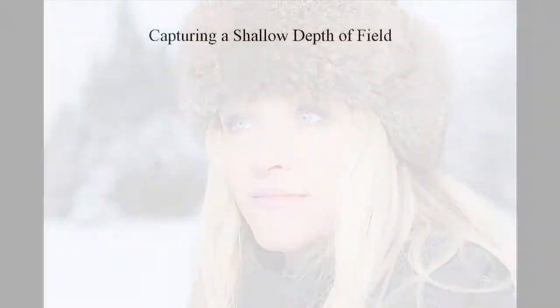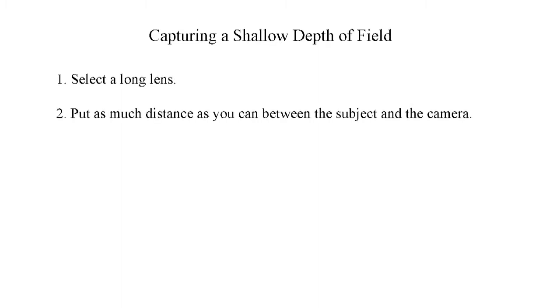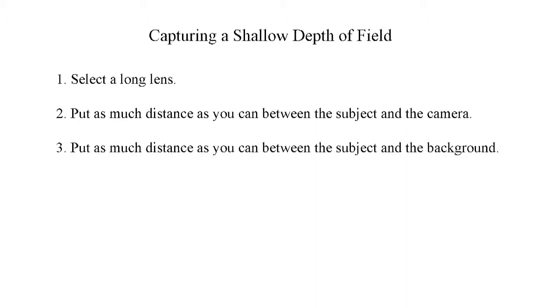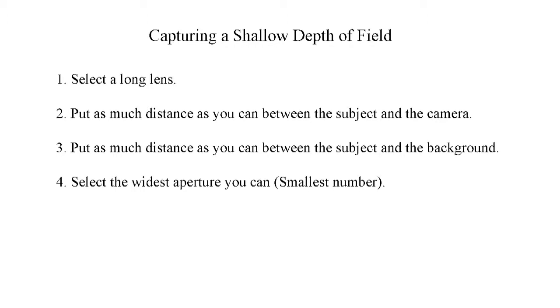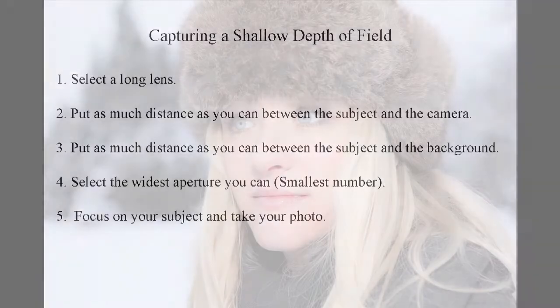Let's take a look at the basic process for achieving a shallow depth of field in a portrait-type shot. We'll use this photo as an example. This was shot at 60mm, so not a particularly long lens, but when combined with an f4.5 aperture and set up properly, the shallow depth of field is achieved — notice the soft, out-of-focus background. Firstly, select a long lens, usually 60mm and up, but the longer the lens the better. Then put as much distance as you can between the camera and the subject. Also put as much distance as possible between the subject and the background. Select the widest aperture you can — the smallest f-stop number. This will affect your exposure, so adjust your shutter speed accordingly, but try to keep it around a hundredth of a second or faster. Now, focus on your subject and take your photo.